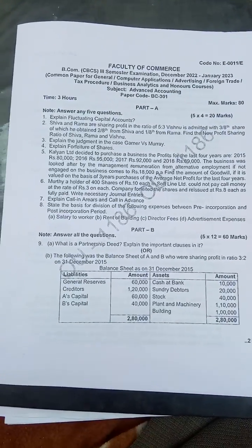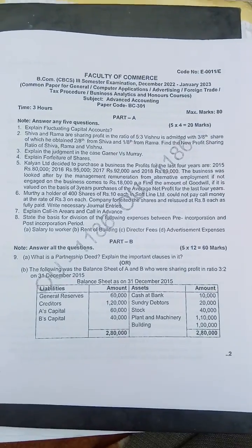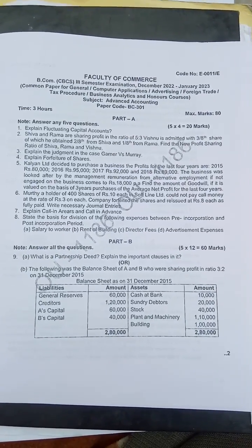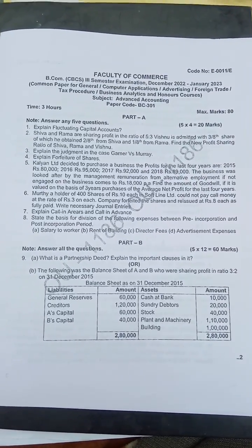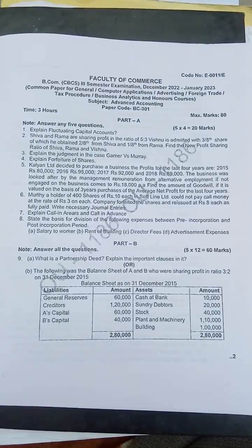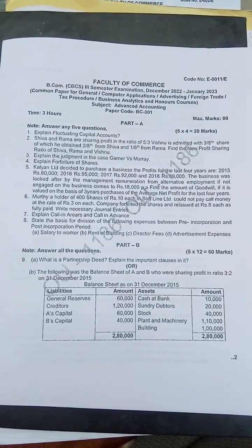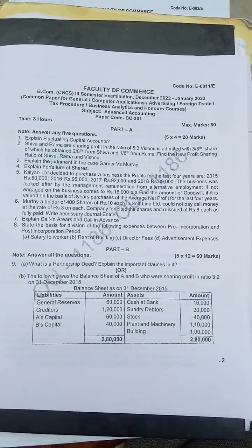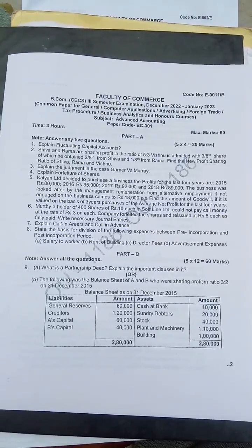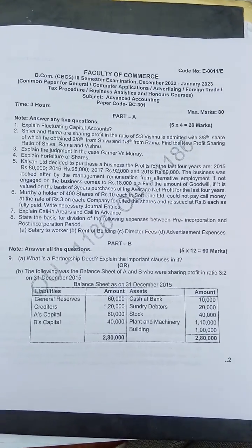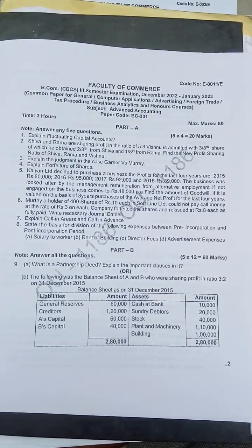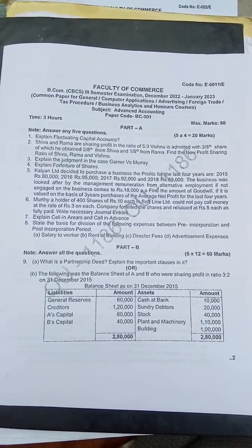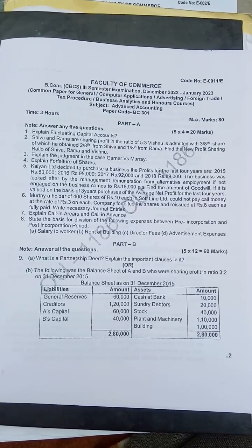What is a partnership deed? The agreement made by the partners before commencement of the business is known as partnership deed. It may be written or it may be in oral. There will be clauses — name of the partners, address of the partners, capital invested by them and all. I wish all the best, my dear students.